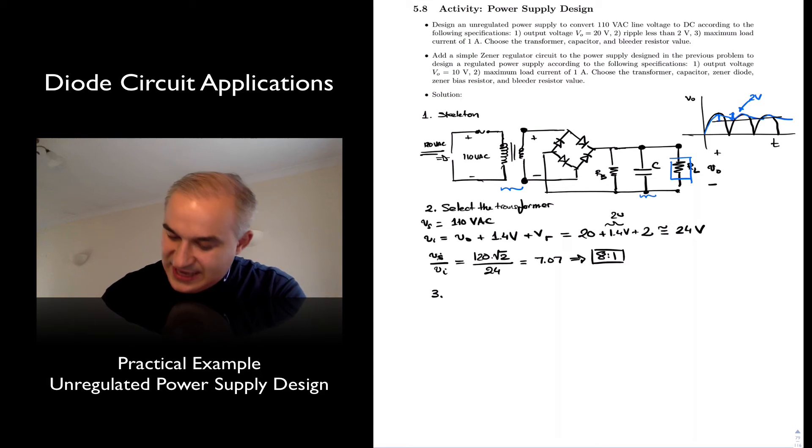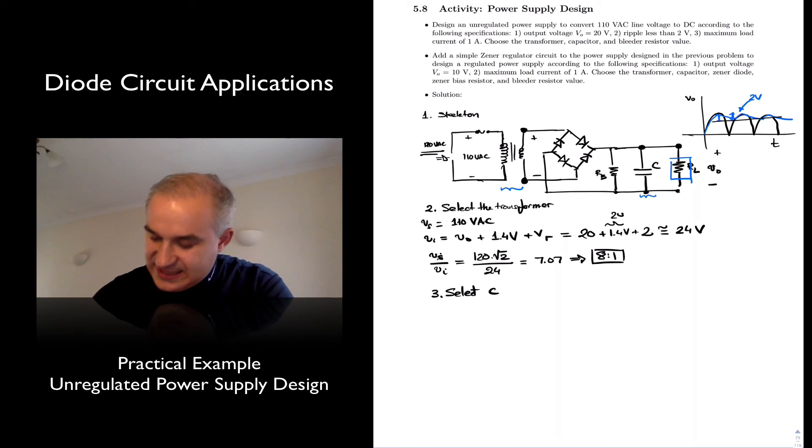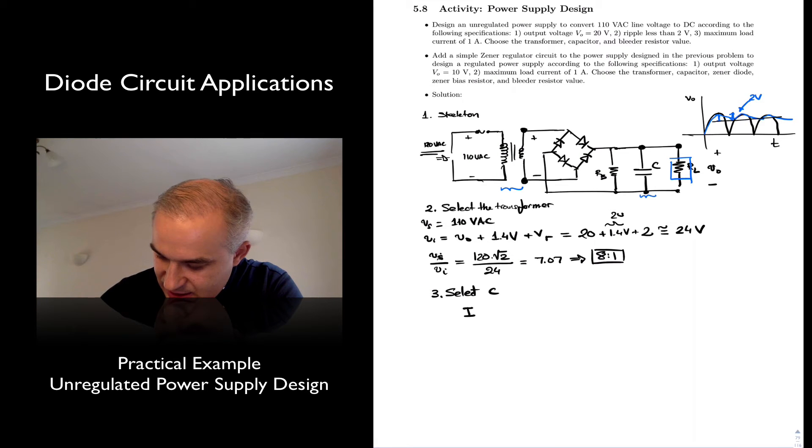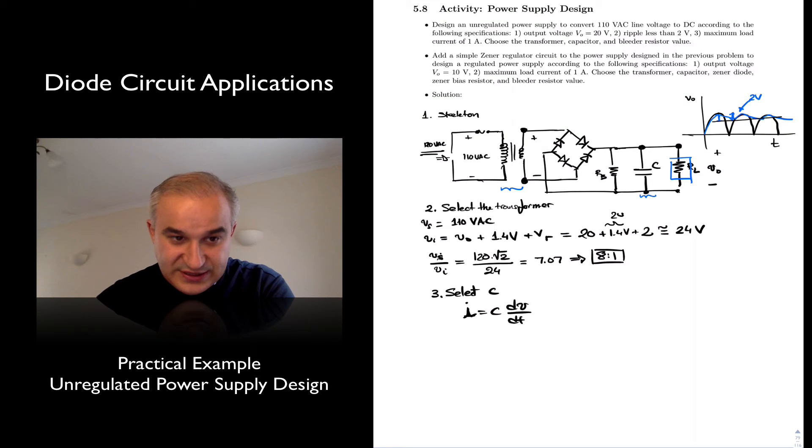Three. We need to select the capacitor C. Now, recall from when we were doing peak detectors, et cetera, that in a capacitor, the current, if you recall, in a capacitor the current voltage characteristics are such that the current is proportional to the rate of change of the variation of the voltage, or in this case, it's going to allow us to choose the capacitor by knowing the change in voltage that you want over the change in time.